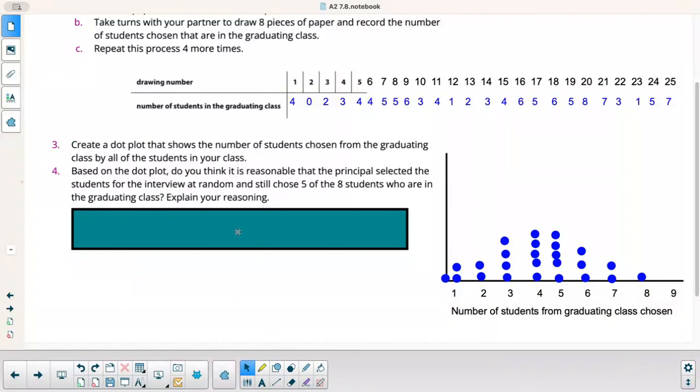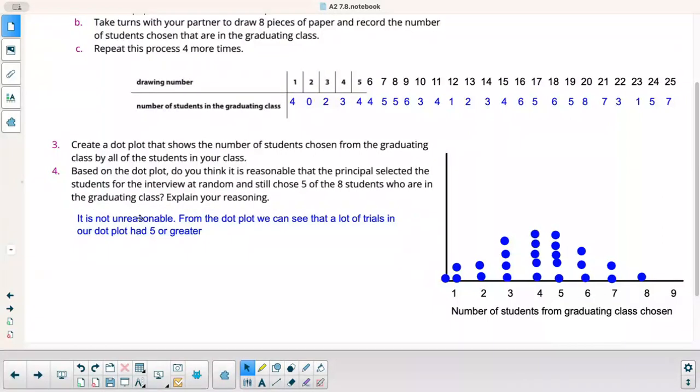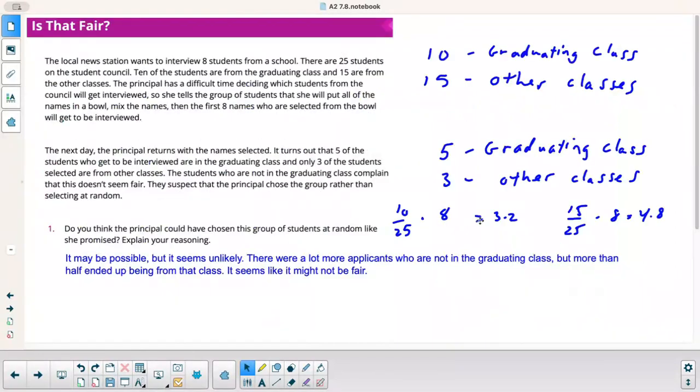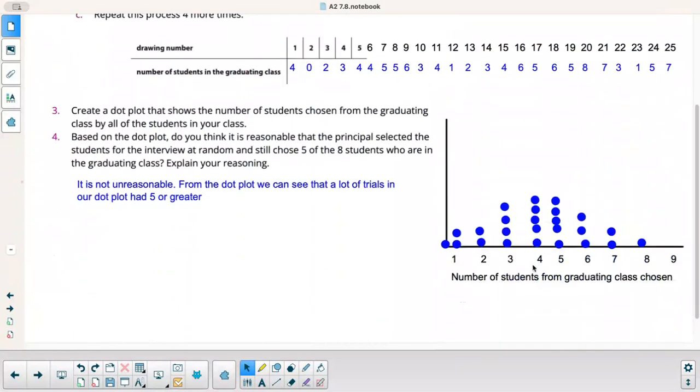Let's go to number four. Based on the dot plot, do you think it's reasonable that the principal selected the students for the interview at random and still chose five of the eight students who are in the graduating class? Explain your reasoning. Well, it's not unreasonable. As we look at this from the dot plot, we can see that there are a lot of trials in our dot plot that had five or greater. So it is possible. Obviously, when we go back and look at that, we said that 3.2 would be kind of like in the middle here. So 3.2, this is a little bit heavier above it, but 3.2 would be more like your mean. So this may be not quite a normal distribution, but still kind of looks like a bell curve somewhat. But it looks like my mean is more up here and it should be more like closer to the three.